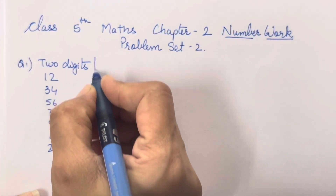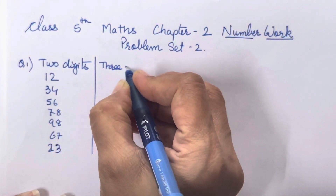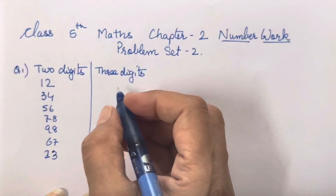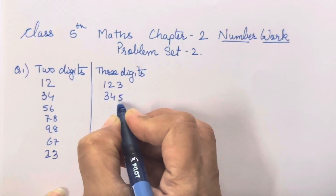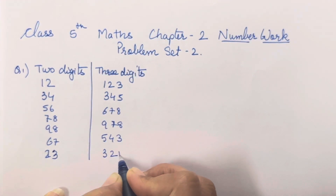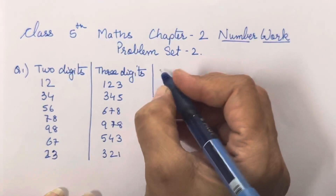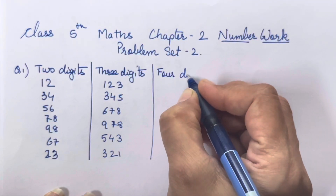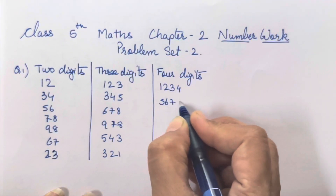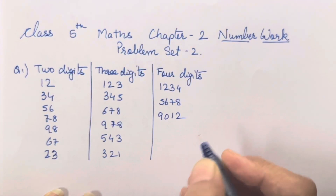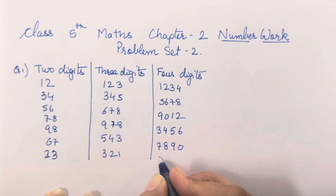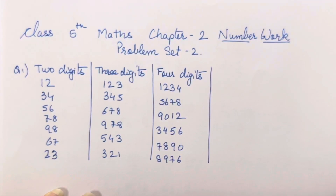You can write any two-digit numbers of your choice. Now we will move on to three-digit numbers - I will show you a few examples. Three-digit numbers should have hundreds, so for example: 123, 345, 678, 975, 43 - any numbers you can write of your own choice. Then we will write four-digit numbers. Four-digit numbers should be in thousands, for example: 1234, 5678, 9012, 3456, 7890, 8976, and so on.